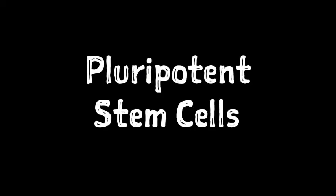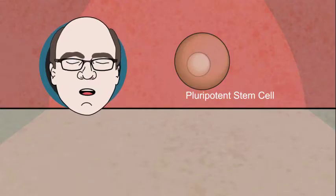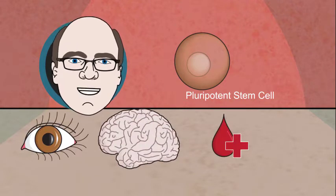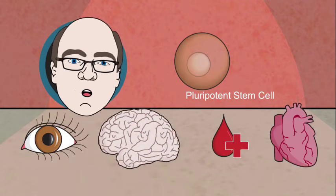Pluripotent stem cells have emerged as an attractive cell source in regenerative medicine research because of their ability to differentiate into many different cell types. They can develop into retinal cells, neuronal cells, blood cells, and even cardiomyocytes that beat on their own.